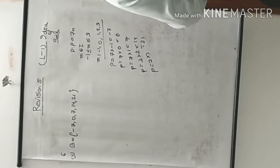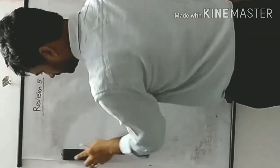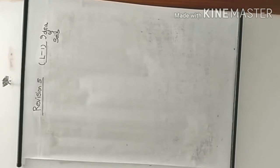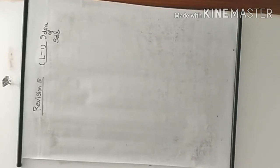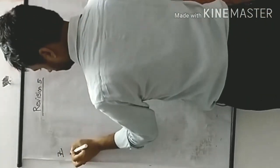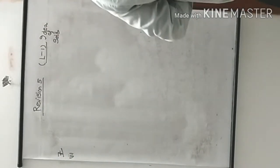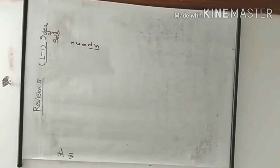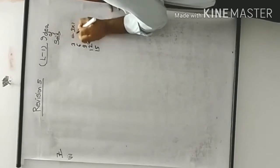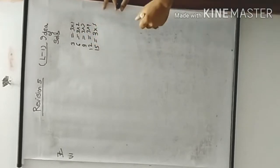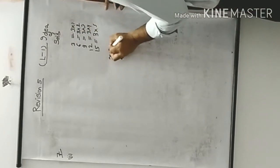Now question 7, second part. The set given is {3, 6, 9, 12, 15} and we have to write it in set builder form. We can see: 3=3×1, 6=3×2, 9=3×3, 12=3×4, 15=3×5. So we can write x such that x = 3n, where 3 is common and n is changing.